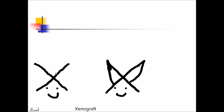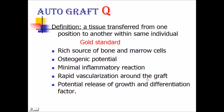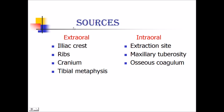A memory tip: xenograft has an 'X' — you can draw an animal from this X to remember that xenograft is from an animal source. Autograft — a tissue transferred from one position to another within the same individual — is considered the gold standard because it contains a rich source of bone and marrow cells, has osteogenic potential, minimum inflammatory reaction, rapid vascularization around the graft, and potential release of growth and differentiation factors. Sources are extraoral (iliac crest, rib, cranium, tibial metaphysis) or intraoral (extraction site, maxillary tuberosity, osseous coagulum).